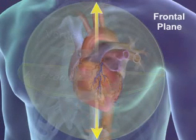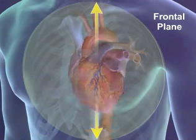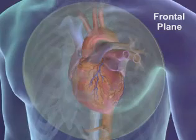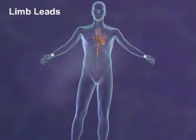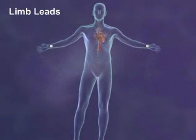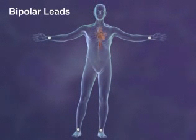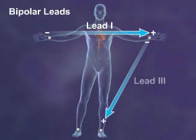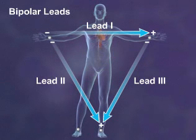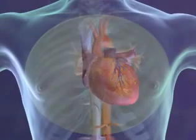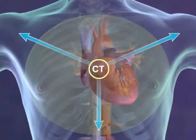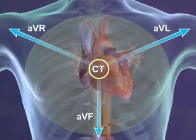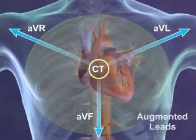The frontal plane provides the first six views, or leads. Four electrodes are attached to the patient's limbs, giving them the name limb leads. These are bipolar leads, meaning that each has a positive and a negative pole. Together, they provide the first three leads. The other three frontal plane views are created by using a central terminal as one pole and one of the limb leads as the other pole. These are called augmented leads.